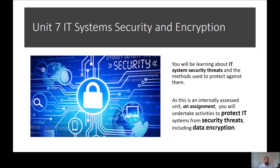Unit 7 is IT System Security and Encryption. Within this unit you're looking at different threats that can affect the business. You'll be looking at network-based threats, information security principles, cryptographic principles and methods, and you'll also examine techniques and implement strategies to protect an IT system.